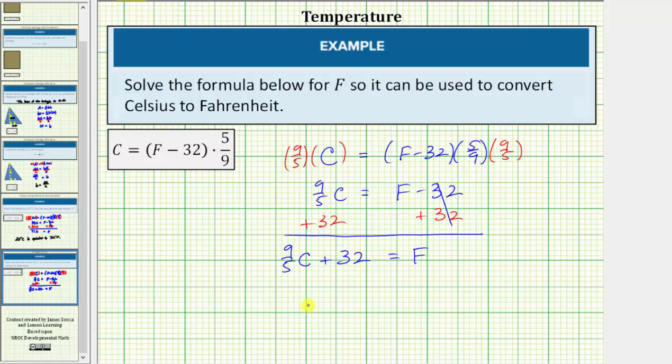So our answer is F equals 9 fifths C plus 32. We can use this formula to convert Celsius to Fahrenheit by substituting the temperature in Celsius for C. I hope you found this helpful. Thank you.